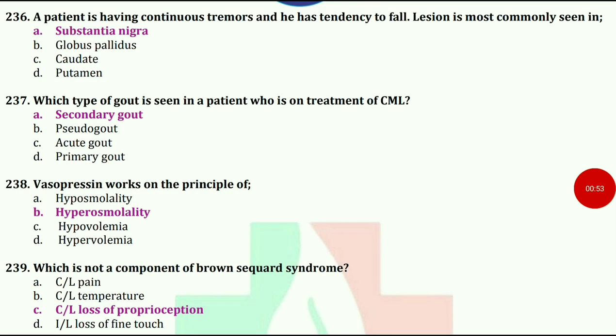A patient is having continuous tremors and tendency to fall. Loss is most commonly seen in? Answer is substantia nigra.